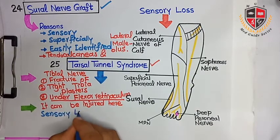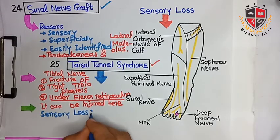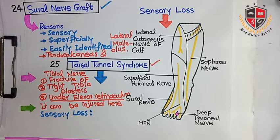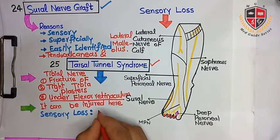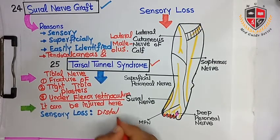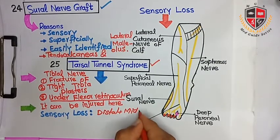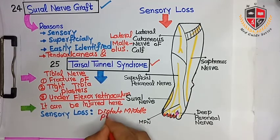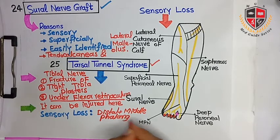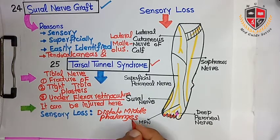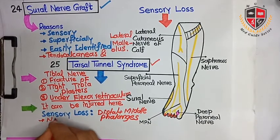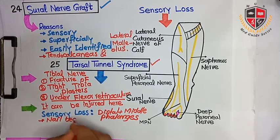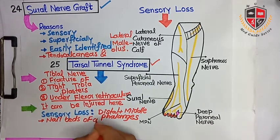The sensory loss occurs on the distal and middle phalanges and the nail beds of all toes.